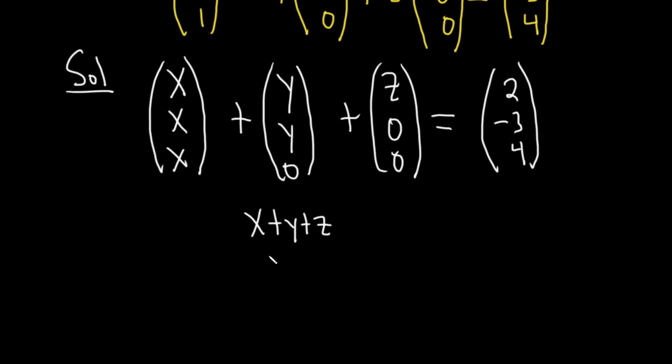And then x plus y plus 0, which is just x plus y. And then x plus 0 plus 0, which is just x. And this is our vector here.